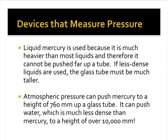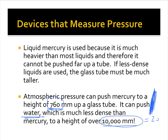Liquid mercury is used because it is much heavier than most liquids and therefore cannot be pushed very far up the tube. If less dense liquids were used, the glass tube would need to be much, much taller. Atmospheric pressure can push a mercury column up to 760 millimeters, which is not very far — basically about that height. Whereas if we look at water, it would be 10,000 millimeters — basically a two-story building. So it's quite tall.